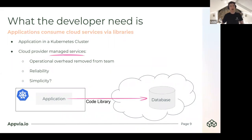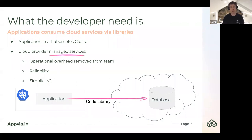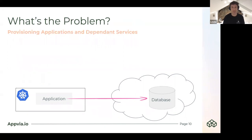What does the developer need when it comes to consuming application dependencies? An application will be shipped to a Kubernetes cluster, and it depends through a code library that wraps a protocol on a dependency — here we depict a database. But why do we need managed services at all? It's really about removing operational overhead from a team. When the core concern is what your application delivers, having a cloud provider manage a service that serves the entire industry can dramatically improve reliability and ideally provide simplicity.